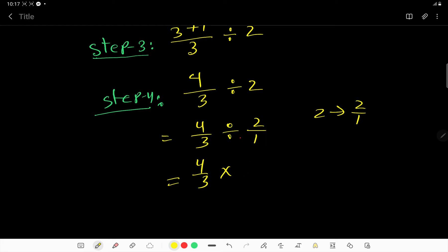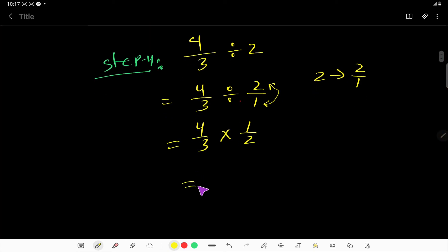have to take the reciprocal of this fraction—that is one over two. That is, we will change the position of numerator and denominator. Right, now we will multiply top to top and bottom to bottom. So we are getting